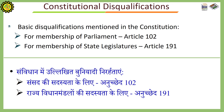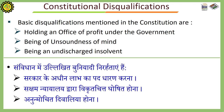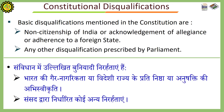Constitutional disqualifications: the basic disqualifications mentioned in the constitution are for membership of Parliament under Article 102, and for membership of state legislatures under Article 191. These include: holding an office of profit under the government, being of unsoundness of mind, being an undischarged insolvent, non-citizenship of India or acknowledgement of allegiance or adherence to a foreign state, and any other disqualification prescribed by the Parliament.